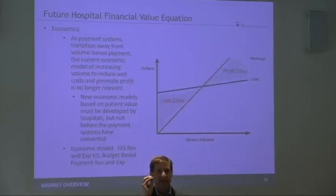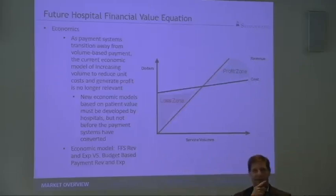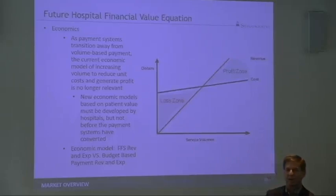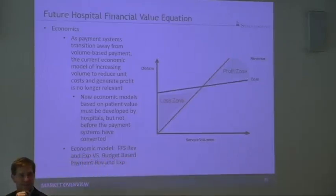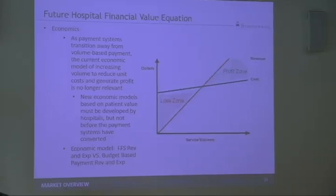Average per capita healthcare costs in the United States last year were just over $10,000. What's the value of one busy primary care practice in a population-based payment world? Do the math: 10,000 times 2,000. $20,000,000 is the value of one busy primary care practice in a population-based payment world. Is there any reason why everyone is interested in primary care physicians right now?